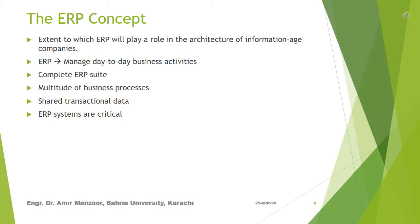ERP systems tie together a multitude of business processes and enable the flow of data between them. By collecting an organization's shared transactional data from multiple sources, ERP systems eliminate data duplication and provide data integrity with a single source of truth. Today, ERP systems are critical for managing thousands of businesses of all sizes and in all industries. To these companies, ERP is as indispensable as the electricity that keeps the lights on.